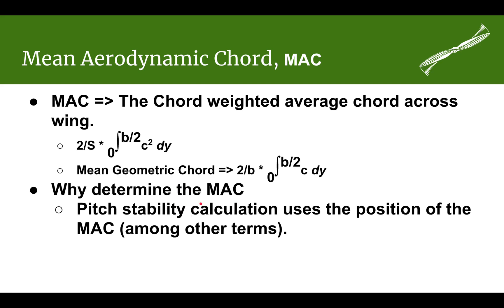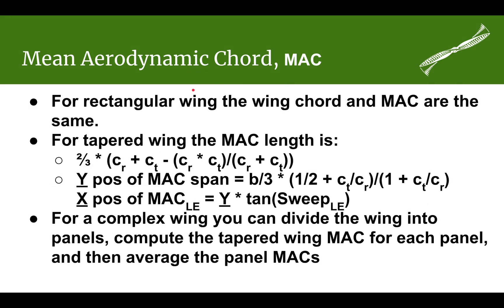If you can figure out the mean aerodynamic chord and use it in your pitch calculations, you can substitute a rectangular wing with that chord and get the same pitch characteristics — it makes calculations much easier. For a rectangular wing, you don't have to do any calculations at all, because your wing chord is identical to your mean aerodynamic chord.